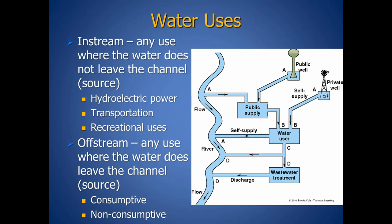When it comes to water uses, there are two major types: in-stream and off-stream. An in-stream water use is any use where the water does not leave the stream channel or the source. Examples include hydroelectric power — we dam a river, bring water through to turn a turbine, then release it right back into the channel. Also transportation, like barges on the Mississippi River, and recreational uses like swimming in the Colorado River. The water is used but never leaves the channel.